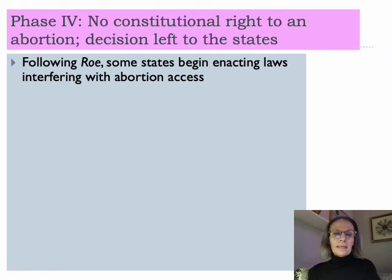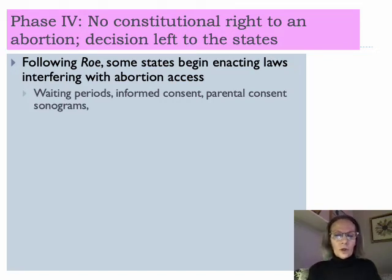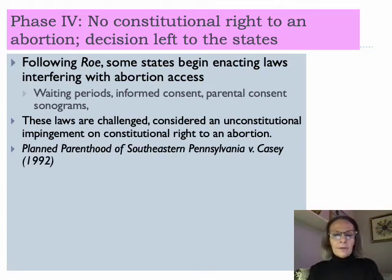Following Roe, some states began enacting laws that interfered with abortion access: waiting periods requiring 24 to 48 hours between consultation and procedure, informed consent with pamphlets about fetal development and sonograms, and parental consent. Many states enacted these restrictions on abortion access. As planned, these laws were challenged in court, with many arguing that laws interfering with abortion access prior to fetal viability impinged upon the constitutional right established in Roe v. Wade.